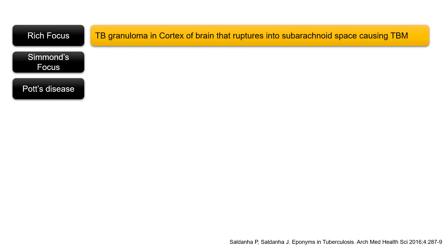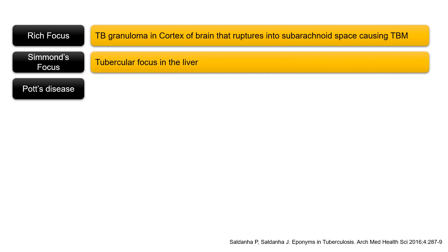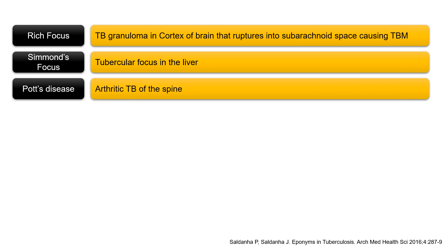Rich focus — to become rich we need our brain, so that's how we can remember this — refers to the TB granuloma in the cortex of the brain that ruptures into the subarachnoid space causing tubercular meningitis. Simon's focus refers to the tubercular focus in the liver. Pott's disease refers to arthritic tuberculosis of the spine.